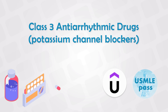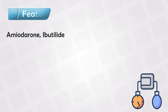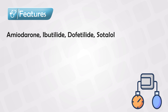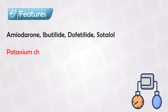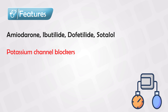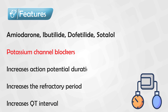The antiarrhythmic drugs that work in class 3 are amiodarone, ibutilide, dofetilide, and sotalol. These medications have many effects on multiple organs, but in the heart they mainly block the potassium channels. This increases the action potential duration, the refractory period, and also the QT interval.